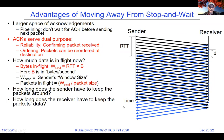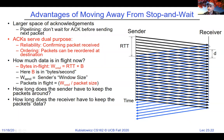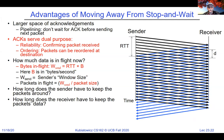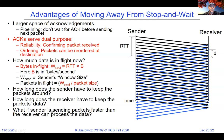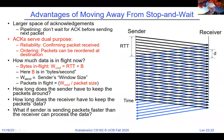What if the sender is blasting packets at the receiver and the receiver is too slow? The data might make it to the receiver only to be thrown out — probably a bad idea. There are interesting questions about buffer space and flow control here.